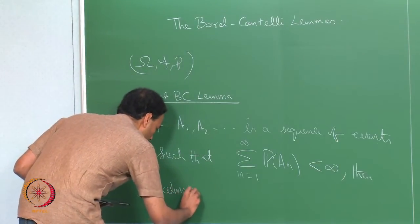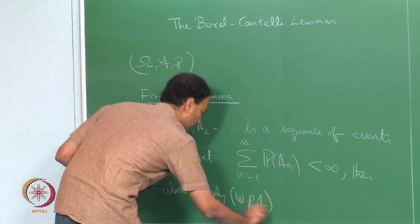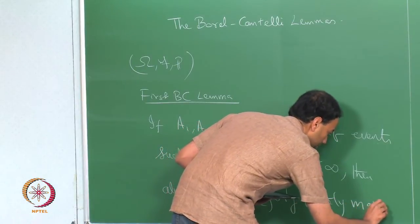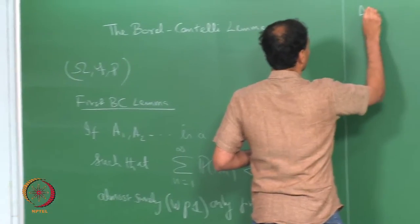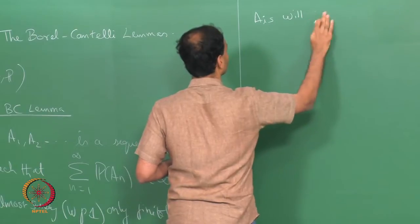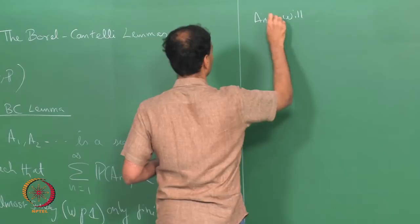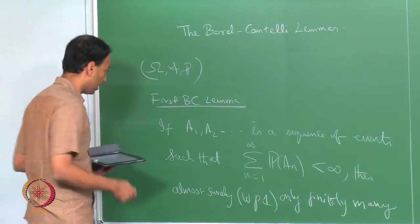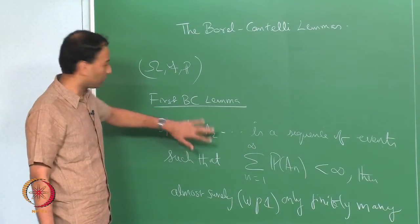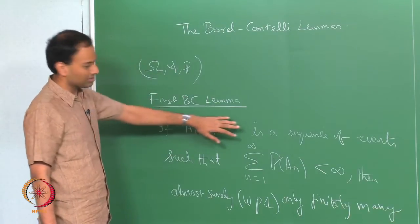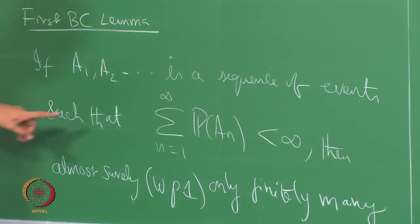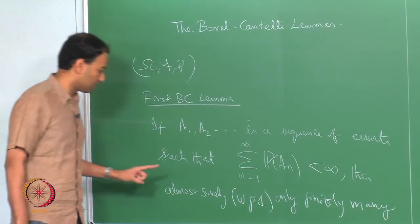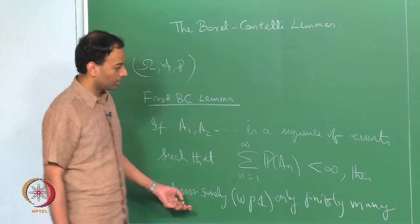then almost surely, or with probability 1, only finitely many of A_1, A_2, ... will occur. These are F-measurable events, so they all have probabilities associated with them. If the sum of the probabilities of A_n from n equal to 1 to infinity is finite, then Borel-Cantelli lemma 1 says almost surely — that is, with probability 1 — only finitely many of the A_n will occur.